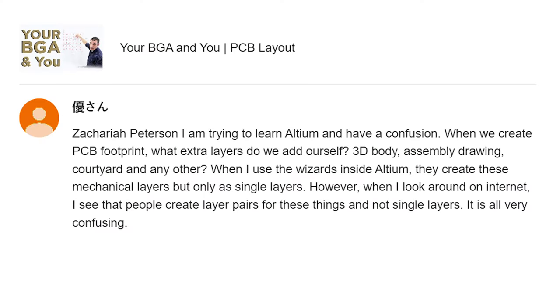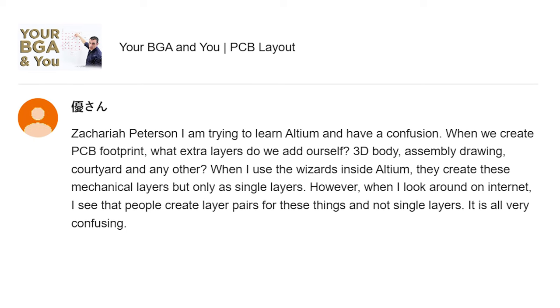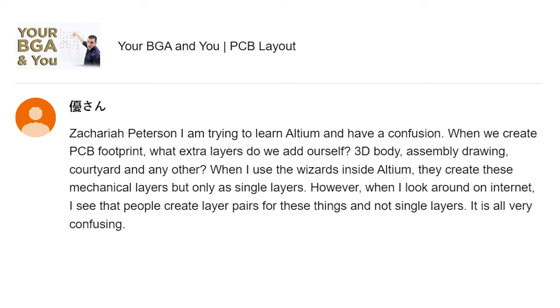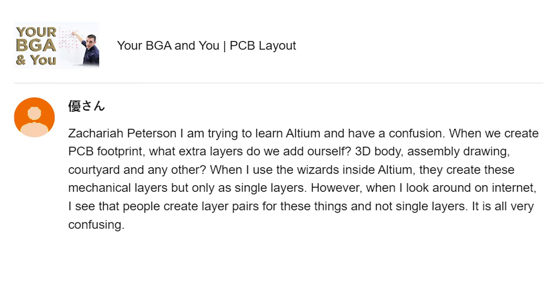So before we get started, let's take a look at that viewer question. Mr. Yu writes: I am trying to learn Altium and have a confusion. When we create a PCB footprint, what extra layers do we need to add ourselves? 3D body, assembly drawing, courtyard, and any other? When I use the wizard inside Altium, they create these mechanical layers, but only as single layers. However, when I look on the internet, I see that people create layer pairs for these things and not single layers. It is all very confusing.